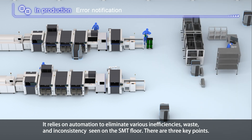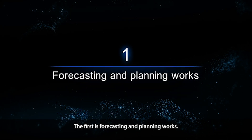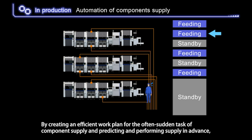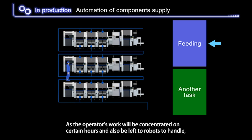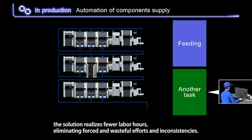There are three key points. The first is forecasting and planning works. By creating an efficient work plan for the often sudden task of component supply and predicting and performing supply in advance, it becomes possible to carry out supplying operations without being affected by production conditions. As the operator's work will be concentrated on certain hours and also left to robots to handle, the solution realizes fewer labor hours, eliminating forced and wasteful efforts and inconsistencies.